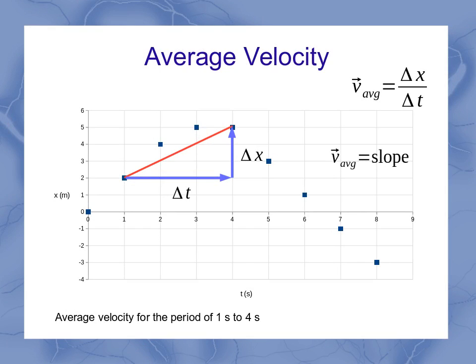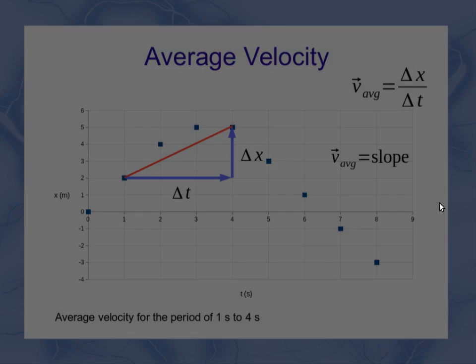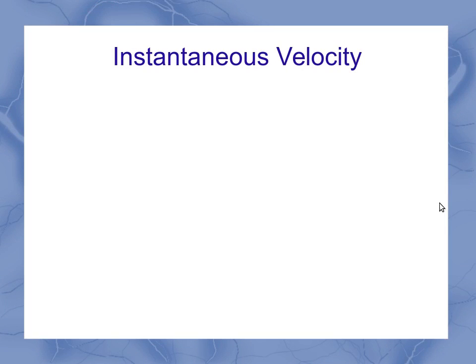Now when we did average velocity, we found that by taking the displacement divided by the time span. Or on a graph, we had two different data points that defined our time span, and we could find the slope connecting those two points to represent our time span and our displacement. For instantaneous velocity, we don't have two points to define something. We're dealing with a single point, and you can't find the slope for a single point.